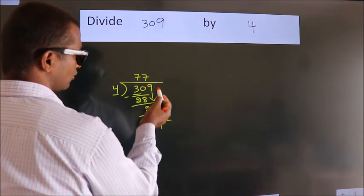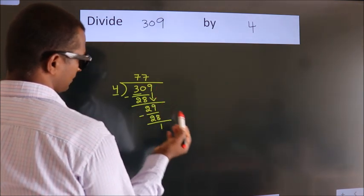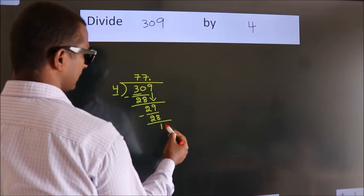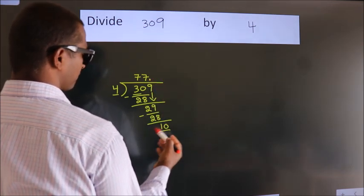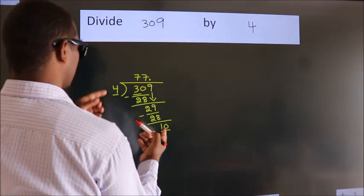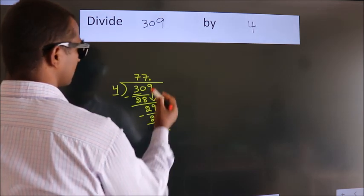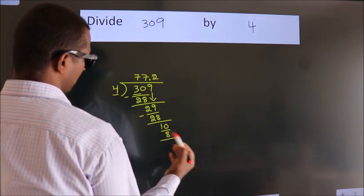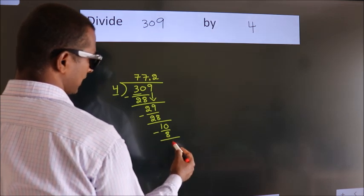After this, no more numbers to bring down. So what we do is we put a dot and take 0. So 10. A number close to 10 in the 4 table is 4 times 2 equals 8. Now we subtract. We get 2.